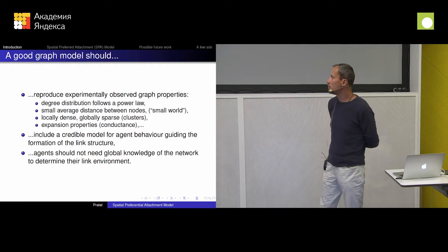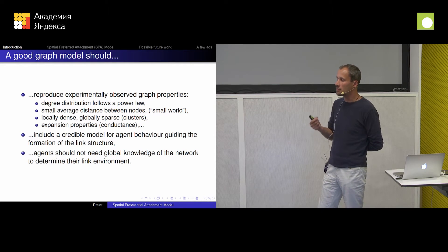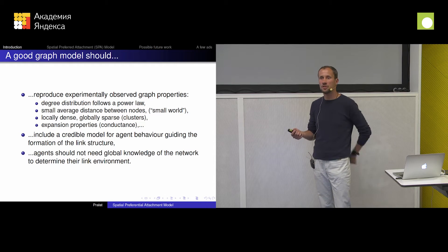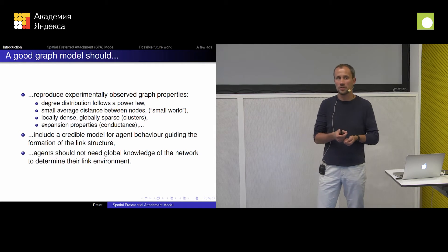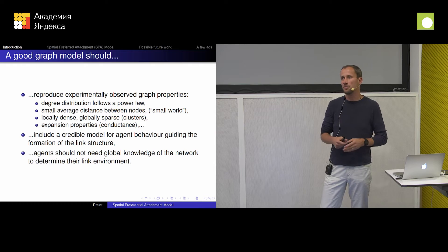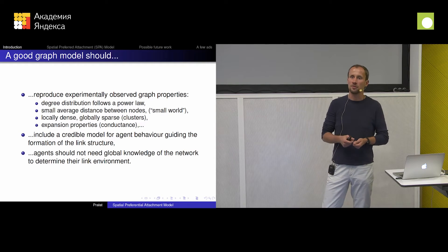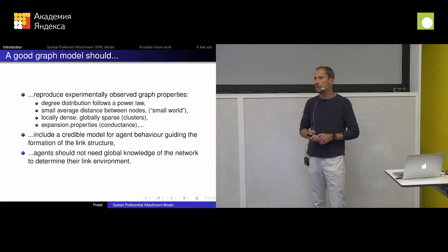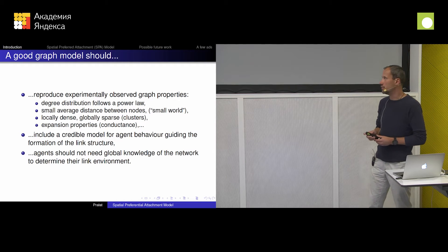Many existing models have one problem: we always assume that when someone joins the network, they know exactly everything about that network. The preferential attachment model has that feature — the new node joining the network connects to one node with probability proportional to its degree. So technically, we're assuming that when you join the network, you know every single degree distribution. That's kind of silly, right? You cannot assume that when you're creating a website, you just know the whole internet.